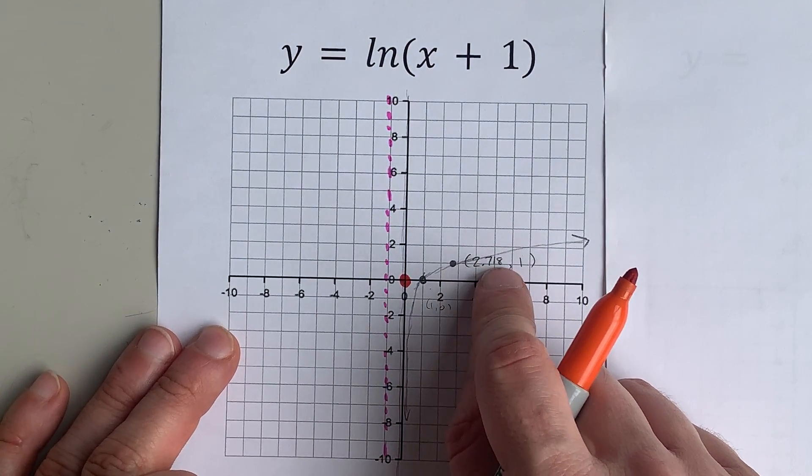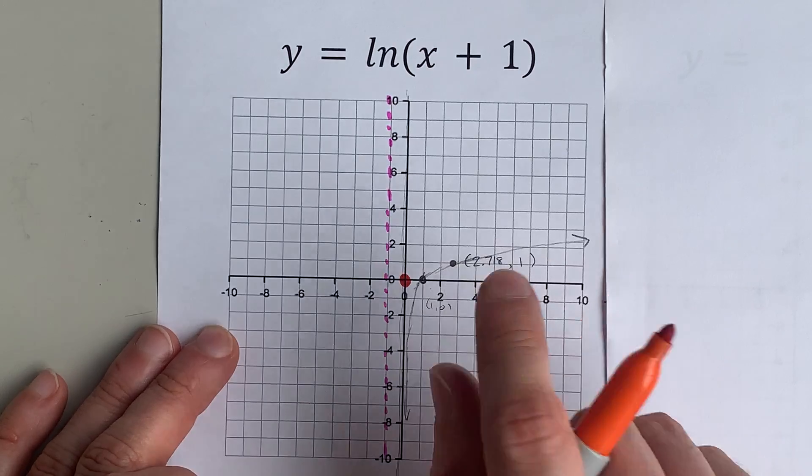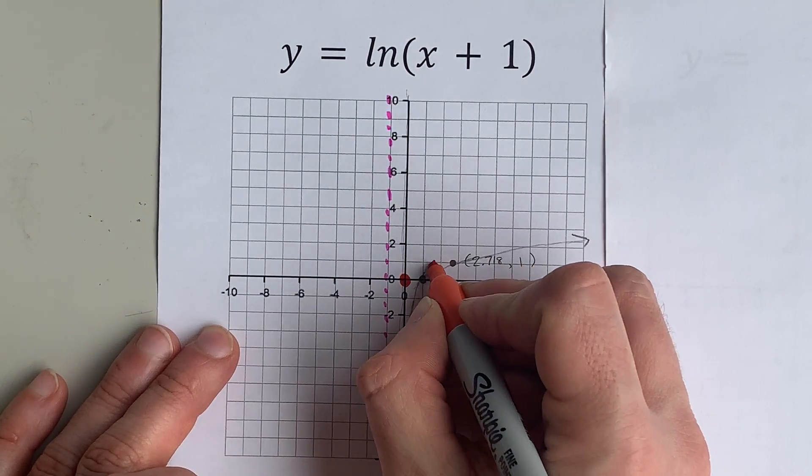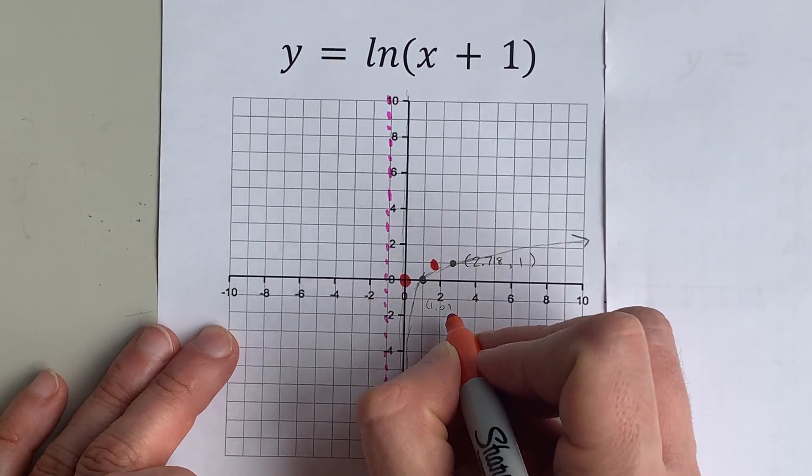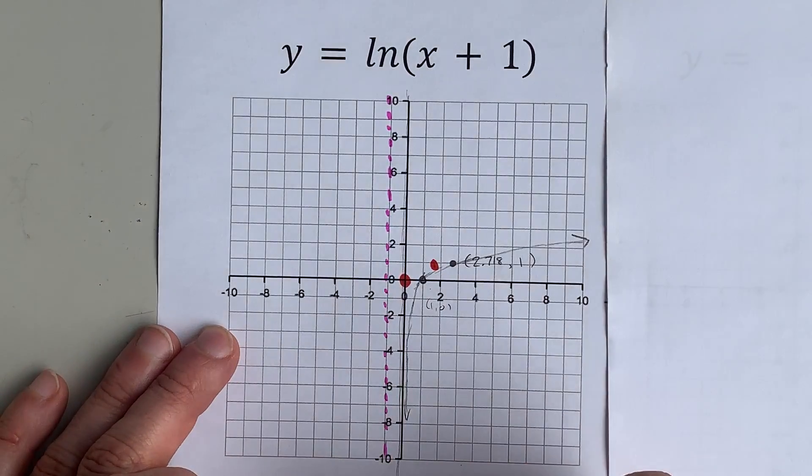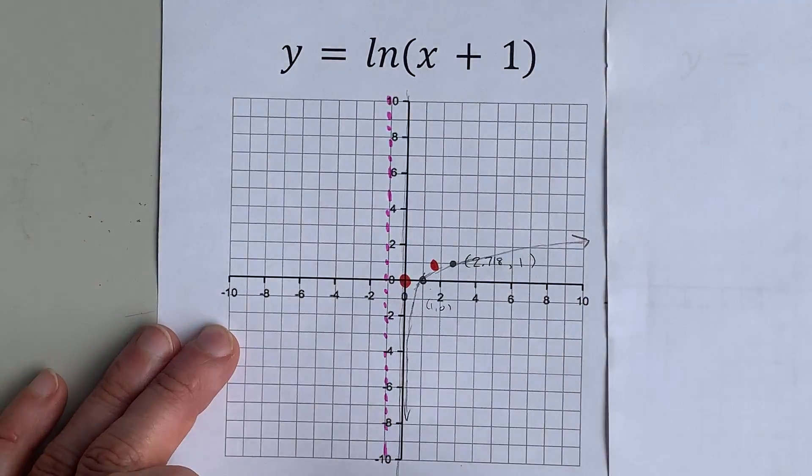e, or 2.718, gets shifted over 1 to 1.718. If you really want to label that, it's e minus 1, and it's still up at 1 unit high.